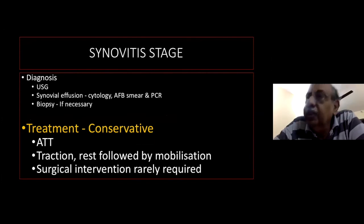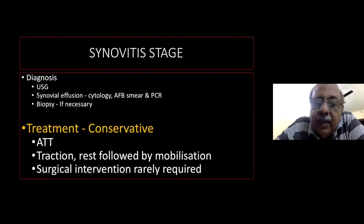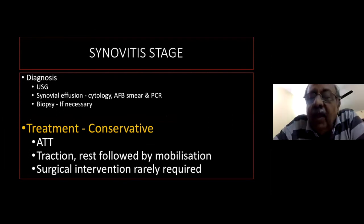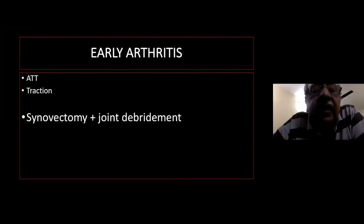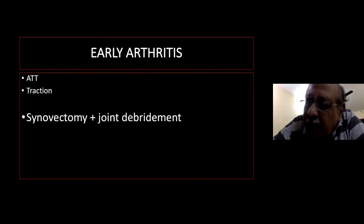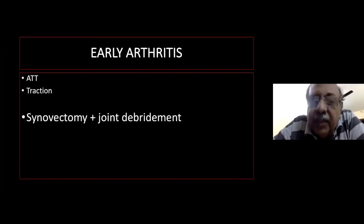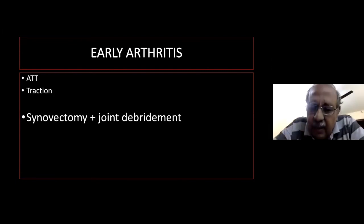In the synovitis stage, treatment is mostly conservative. After diagnosis, start ATT, give traction followed by rest, then gradual mobilisation and weight bearing. The only surgical indication is for biopsy. In early arthritis, in addition to ATT and traction, synovectomy and joint debridement may be needed. The examiner may ask how synovectomy helps: the synovium regrows within weeks, bringing new blood vessels that replace the diseased ones, delivering antituberculous drugs into the joint; additionally, the disease load is reduced.